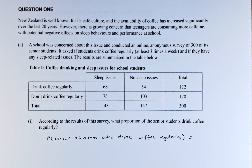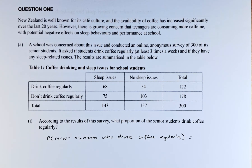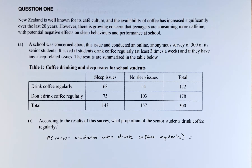The results are summarised in the table below. On the rows we have 'drink coffee regularly' and 'don't drink coffee regularly.' On the columns we have 'sleep issues,' 'no sleep issues,' and the total as usual.